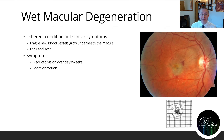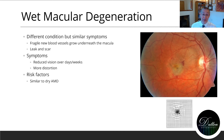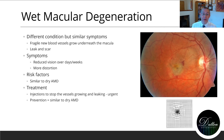The symptoms can be similar to dry macular degeneration: reduced vision in the centre and distortion, but this will happen over days or weeks rather than months and years. The risk factors for wet macular degeneration are similar to those for dry macular degeneration. In terms of prevention, it's again similar: the lifestyle and dietary changes, and giving up smoking.